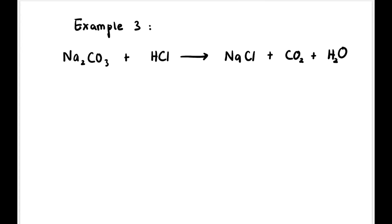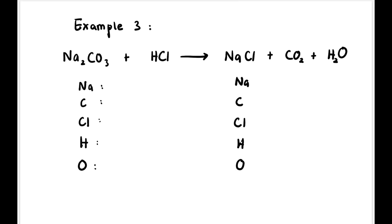Next example: Na₂CO₃ + HCl → NaCl + CO₂ + H₂O. List down all elements: Na, C, Cl, H, and O on both sides. On the left hand side: two Na, one C, one Cl, and three O. On the right hand side: one Na, one C, one Cl, two H, and three O (two from CO₂ plus one from H₂O).